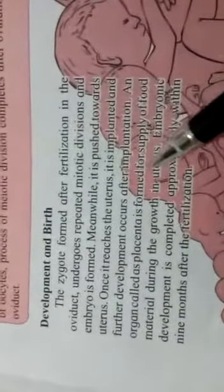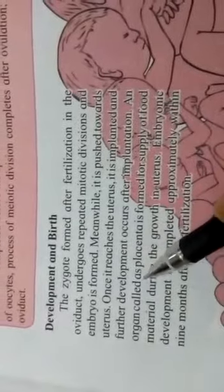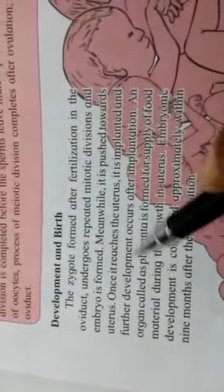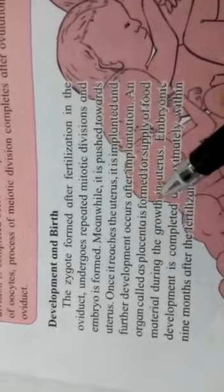Development takes place in the uterus where the embryo will be implanted. Further development occurs after implantation. An organ known as the placenta is formed.